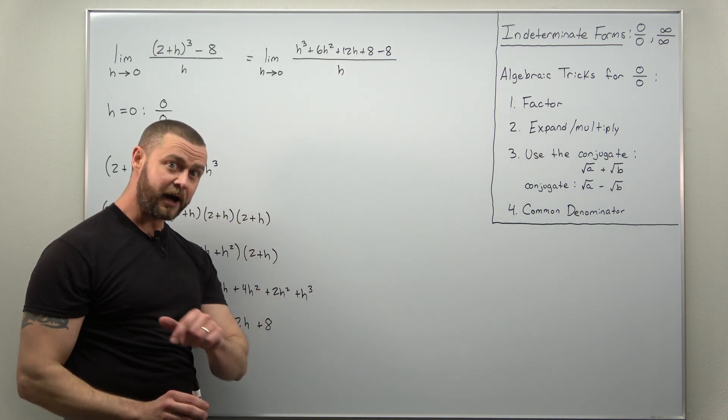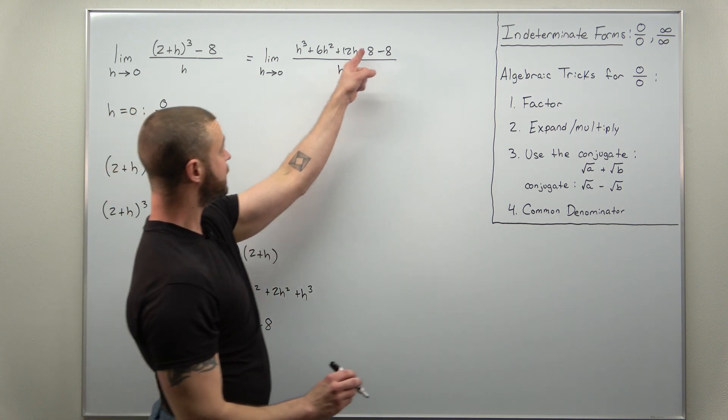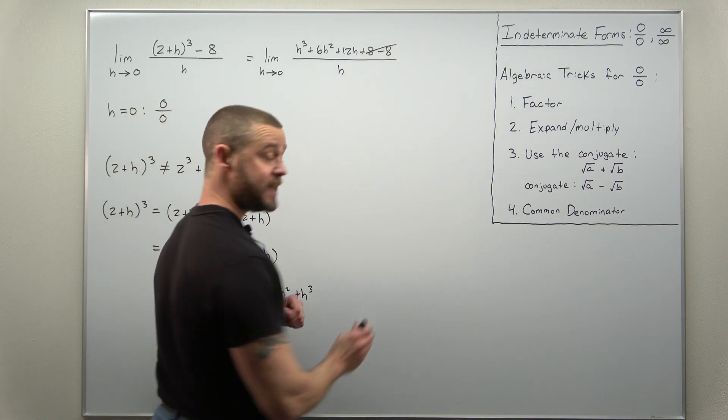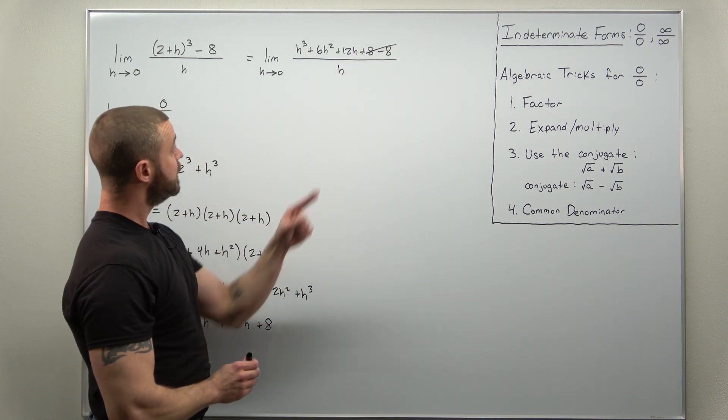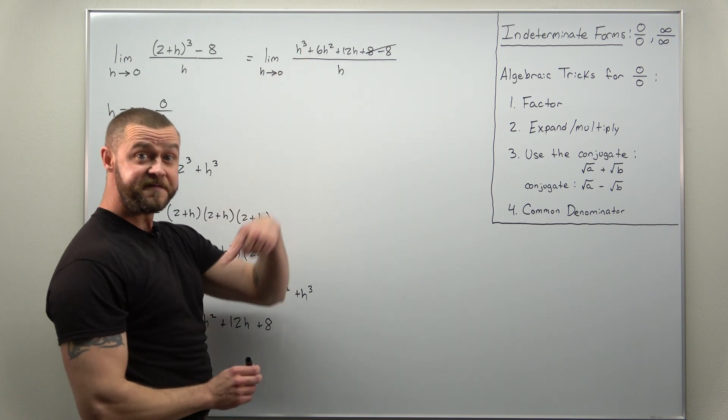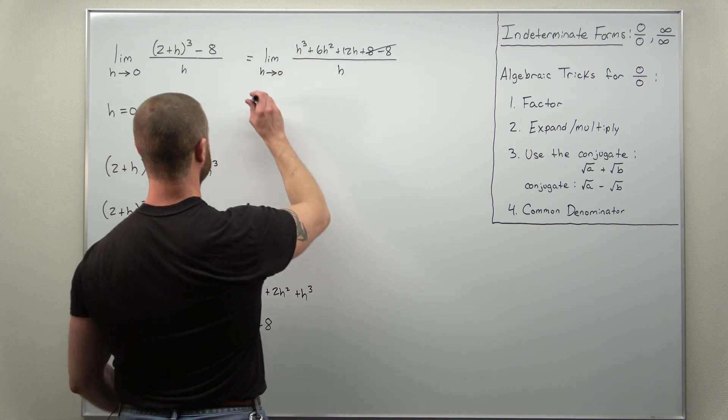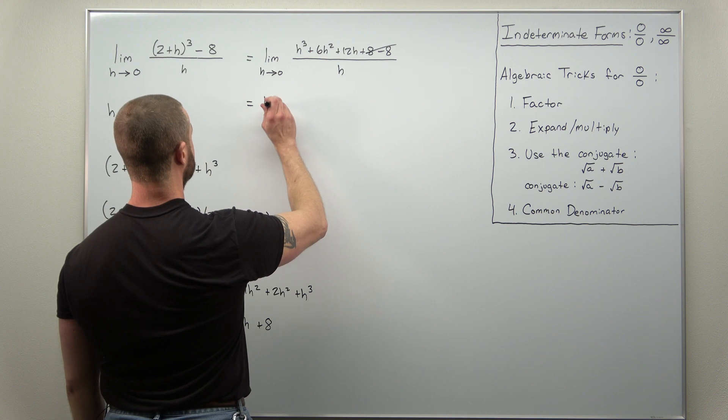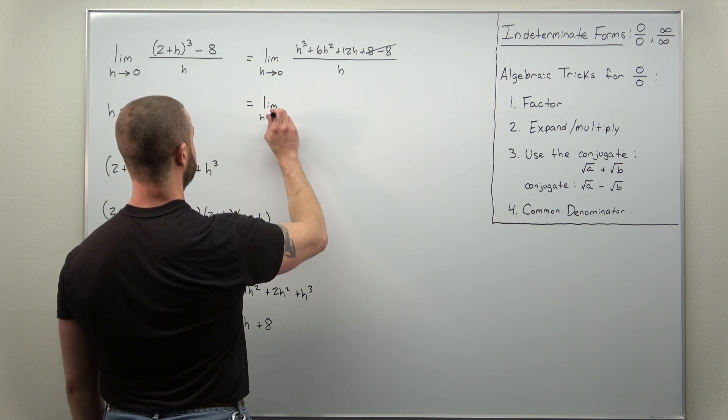Now we're going to take this one step at a time so that way you see all the steps. First, you can cancel the 8s out there, and what's left, notice you can factor h out from the numerator. So let's go ahead and do that.